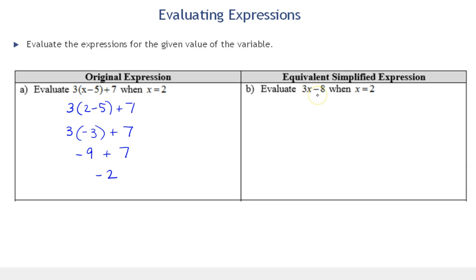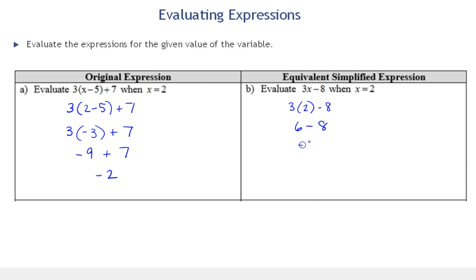Now if these expressions truly are equivalent, when I replace x with 2 in the simplified expression I should also get negative 2. So I'm going to replace x with 2 — I'll put that in parentheses. In general, whenever you're replacing a variable with a number, put it in parentheses. By doing so, we're showing the juxtaposition of 3 and 2, which implies multiplication. We have multiplication and subtraction, so we do multiplication first. 6 minus 8 is in fact negative 2 — these two results correspond.